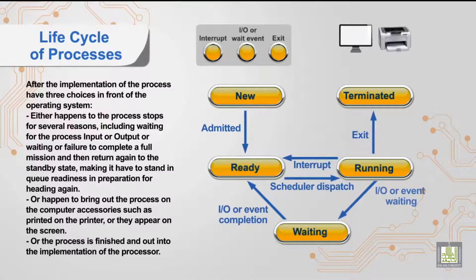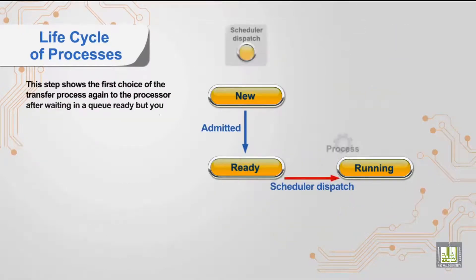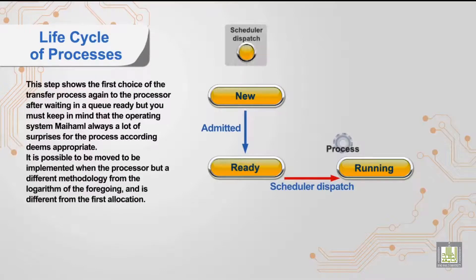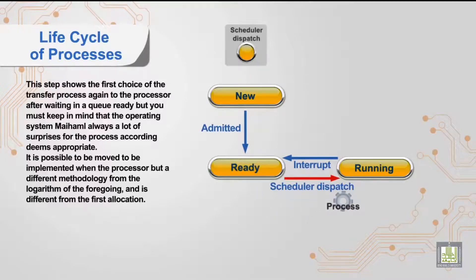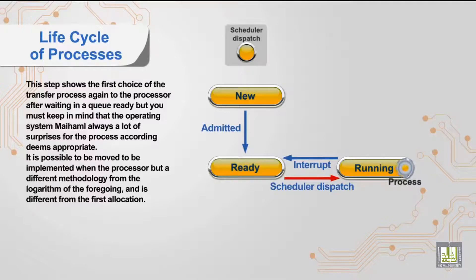This step shows the first choice: transferring the process again to the processor after waiting in the ready queue. You must keep in mind that the operating system always has a lot of surprises for the process according to what it deems appropriate. It is possible for the process to be moved and implemented with the processor using a different methodology or algorithm from the first allocation.